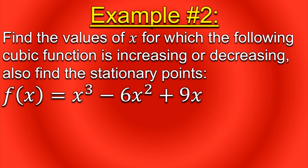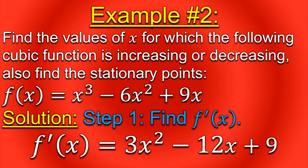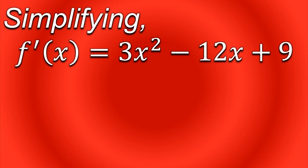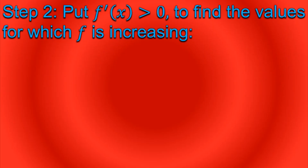Moving on to example number two. In this example we need to find the values of x for which the following cubic function is increasing or decreasing, and also find the stationary points. A cubic function is a function whose greatest power is equal to 3. Moving on to the solution — first, find the derivative of the function. The derivative of x³ − 6x² + 9x is 3x² − 12x + 9. Next, we simplify f'(x) a little bit, which will help us find the values of x later.